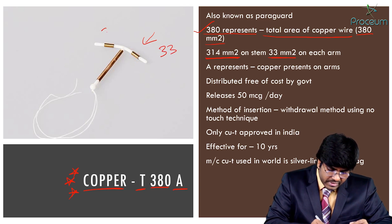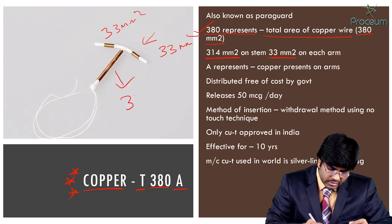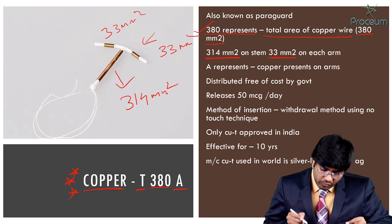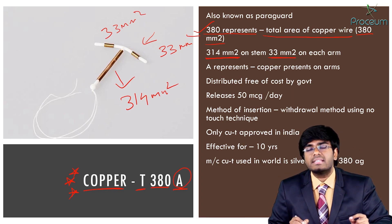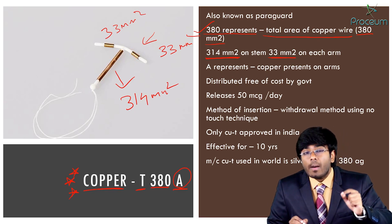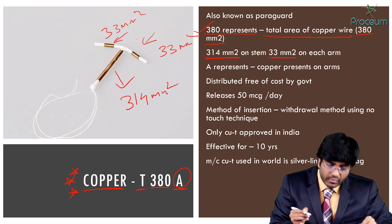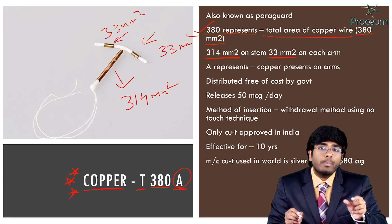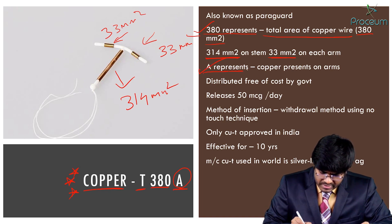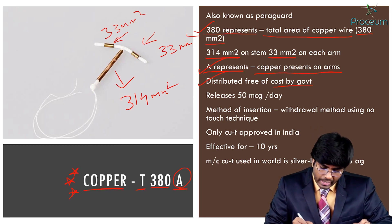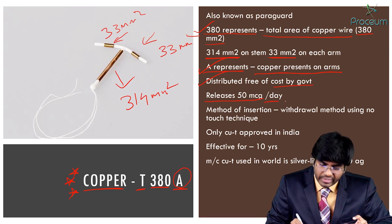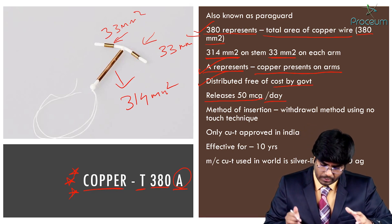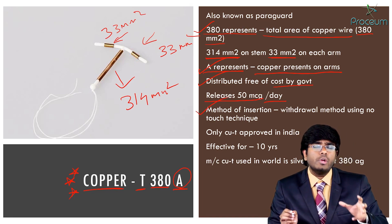The 'A' in Copper T380A represents that copper is present even on the arms — some copper T devices have no copper on the arms. It is freely distributed by the government at no cost, and it releases 50 micrograms of copper every day, causing mild aseptic inflammation.